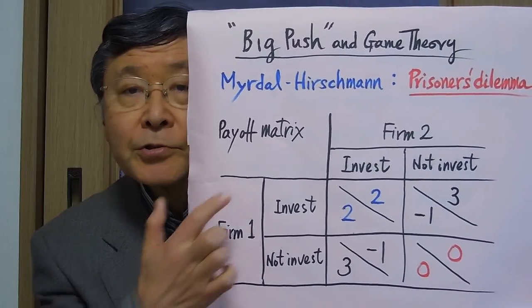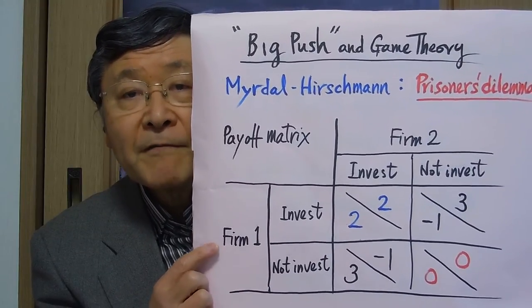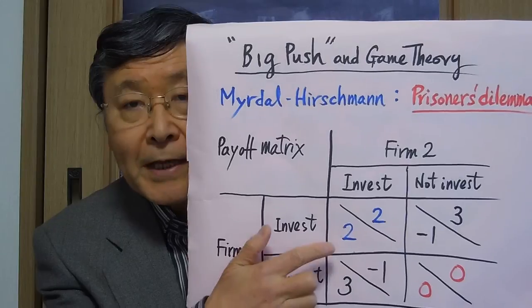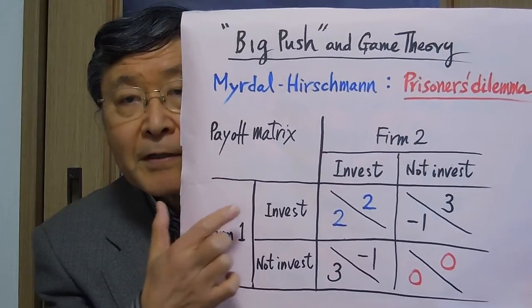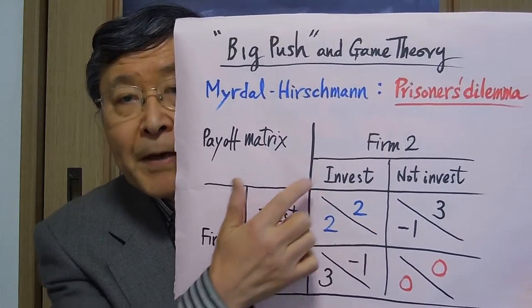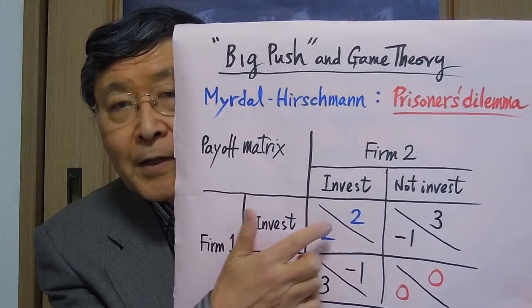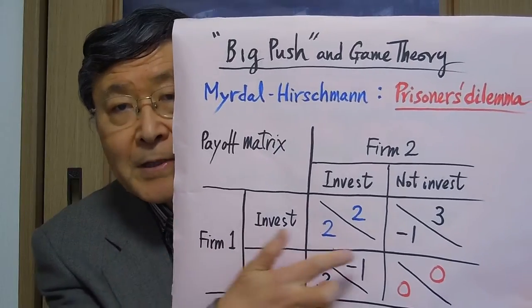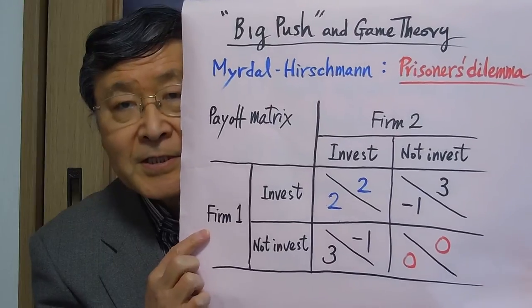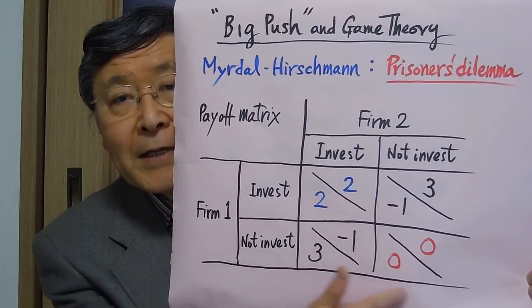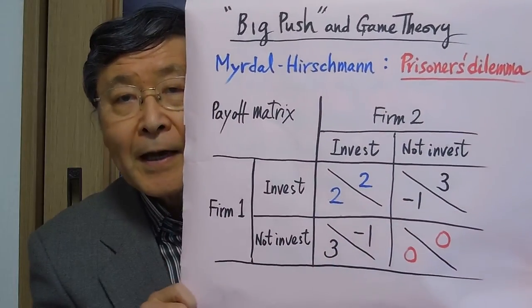Suppose there are two private firms in a basic industry deciding whether to invest to break the bottlenecks. If they invest together, both earn a lot — say two million dollars each — and benefit the economy as a whole. If neither invests, the bottleneck remains, neither firm earns any profit, and society does not benefit.